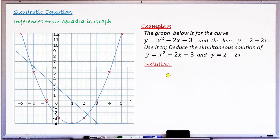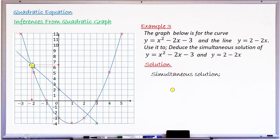The simultaneous solution is the value of x and y at each point of intersection. At the first point, drawing lines to both axes: x ≈ −2.2 and y ≈ 6.4. So the first solution is x = −2.2, y = 6.4.